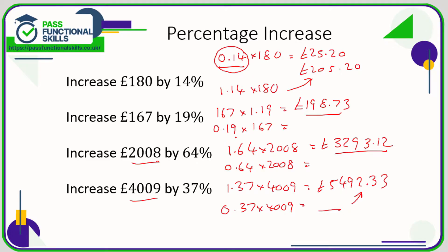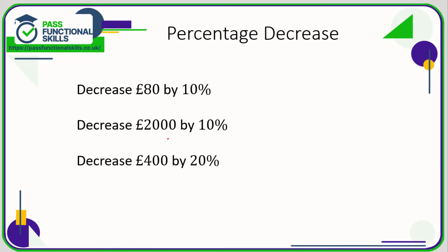So two ways to do it, depending on how confident you are with your percentage multipliers. Quick recap: if you're working out 73% of something, you'd use the multiplier 0.73, but if you want to increase by 73% you would multiply your total by 1.73.